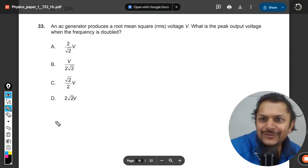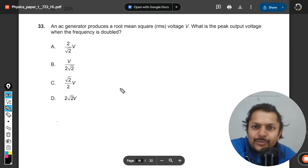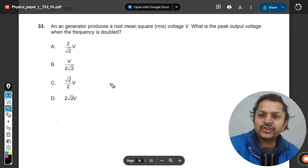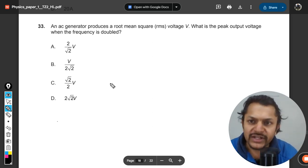Okay, let's see what is there in this question. An AC generator produces root mean square voltage V. What is the peak output voltage when the frequency is doubled? So just in the other question I was telling you...